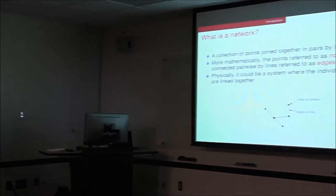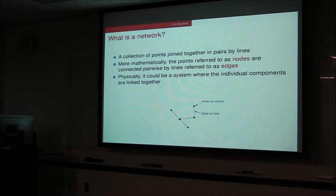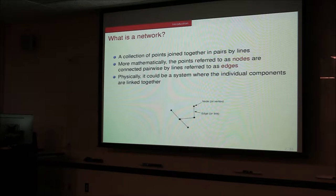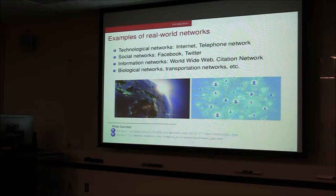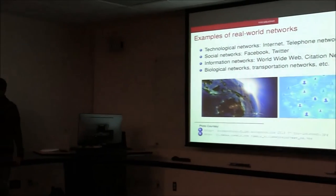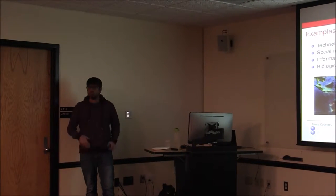So what is a network? Mathematically, a network consists of a set of nodes and a set of edges which connect these nodes pairwise — that's a network, also called a graph. More physically, a network could be thought of as a system composed of individual subsystems or components linked together. For example, the internet is a massive network of computers, routers, or other devices as nodes, with physical layer connections as edges. Social networks like Facebook or Twitter have individuals as nodes and friendship relationships as edges.